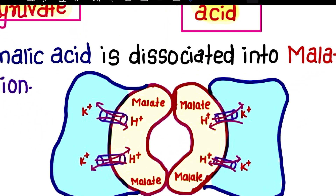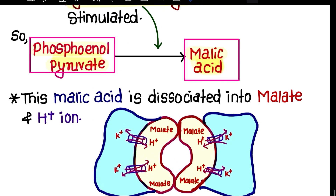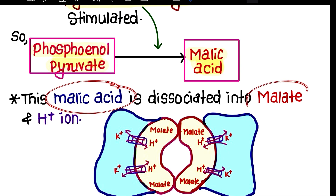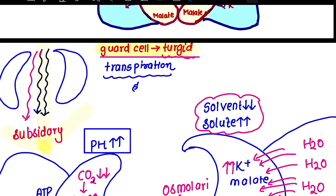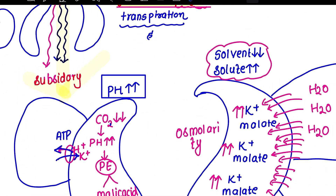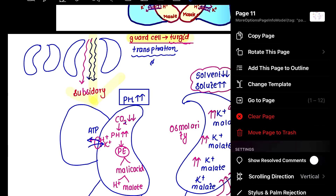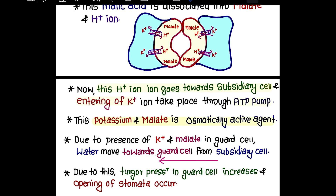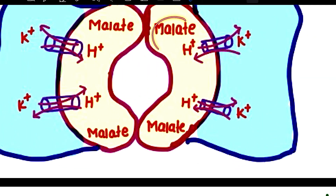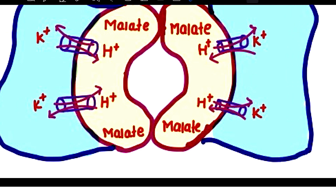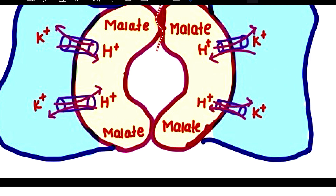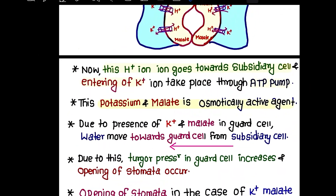Malic acid dissociates — malic acid dissociates into malate ions and H+ ions. Malate and H+ ions are produced when malic acid dissociates inside the guard cells, which plays a role in stomatal opening mechanism.